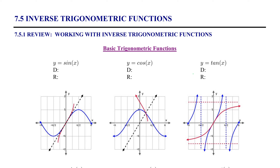Let's begin with y equals sine of x. Recall that the domain of sine of x is negative infinity to infinity, but the graph of sine of x does not pass the horizontal line test. Therefore, on its domain from negative infinity to infinity, it is not invertible. So we're going to restrict the domain so that the entire range is exhibited, but the restricted domain contains a portion that is one-to-one and therefore invertible.